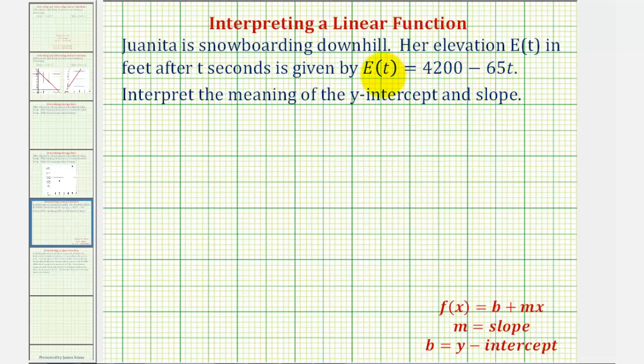So the first thing we need to recognize is that the given function is in the form f(x) equals b plus mx, where b, the constant term, is the y-intercept and m, the coefficient of x, is the slope.